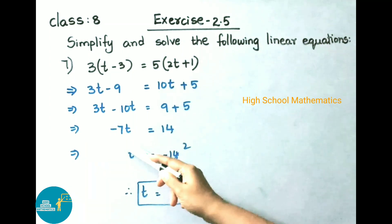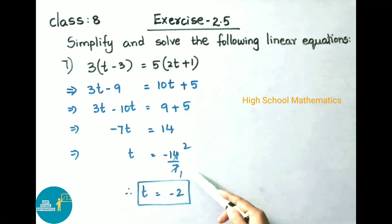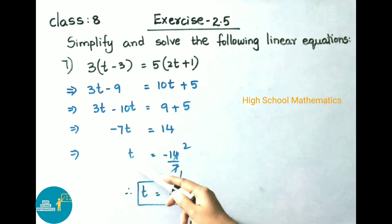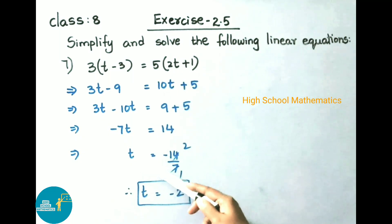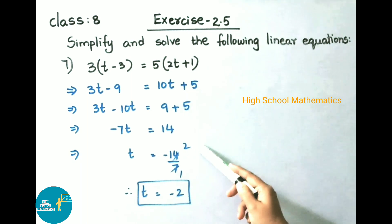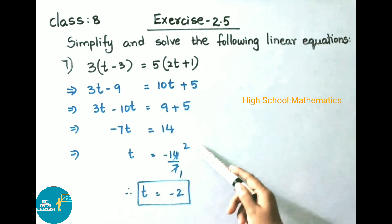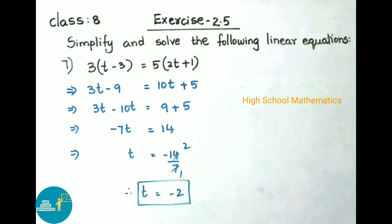Here minus 7 is multiplying, so on transposing it becomes dividing. So t equals minus 14 by 7. 7 twos are 14, and there is a minus sign, so this minus will be applied. Therefore t equals minus 2.